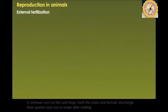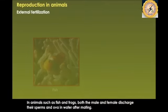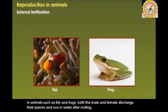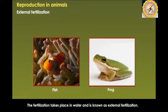In the case of external fertilization, such as in fishes and frogs, both the male and the female discharge their sperms and ova respectively into water after mating. The fertilization ultimately takes place in water, and this is known as external fertilization.